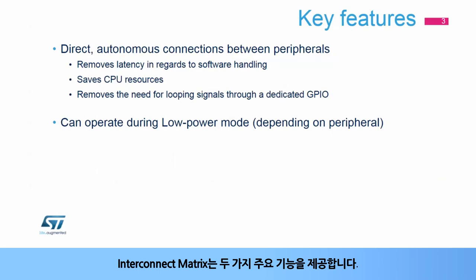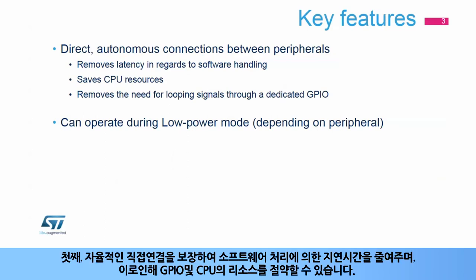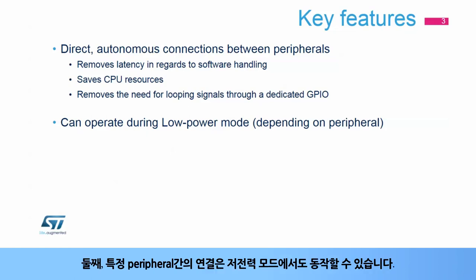The interconnect matrix offers two features. First, it ensures direct and autonomous connections between peripherals, allowing removal of latency in regards to software handling, thus saving GPIO and CPU resources. Second, the interconnection between certain peripherals can even operate during low power modes.